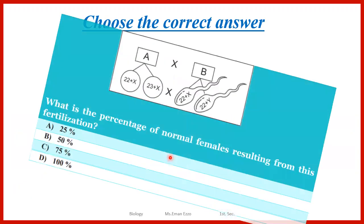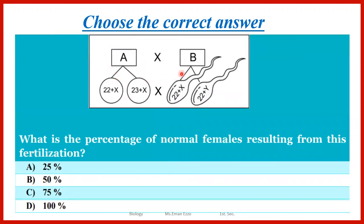The next question shows two individuals and their gametes. The first gamete is 22 + X and the second gamete is 23 + X. From the image, the first is a normal ovum and the second is an abnormal ovum because it has one extra somatic chromosome. The male produces two types of sperms: 22 + X and 22 + Y — these are normal sperms.